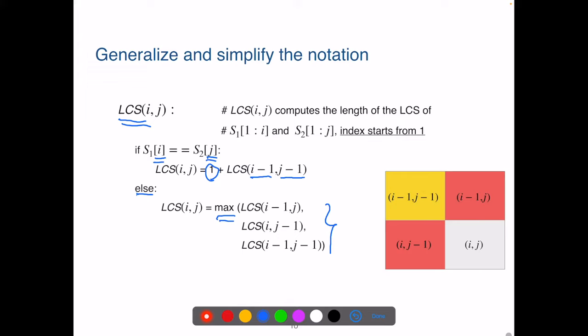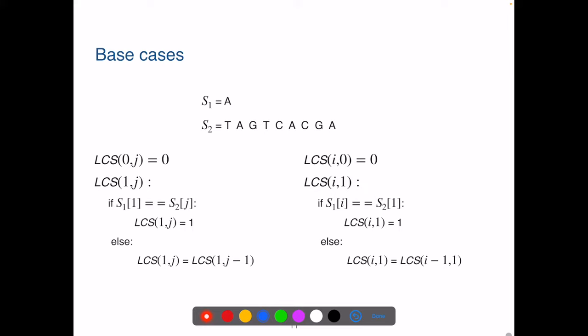In terms of the table we always use for dynamic programming, there are two parameters we need to define a subproblem, i and j here. Therefore, we will be looking at a two-dimensional table. The solution to problem (i, j) can be determined based on the solutions to reduced problems either (i-1, j-1), or (i, j-1), or (i-1, j).